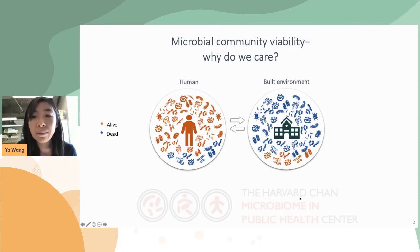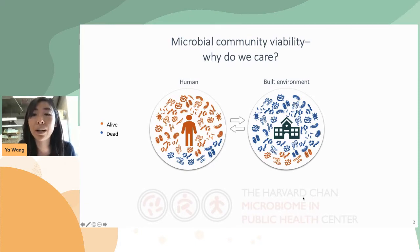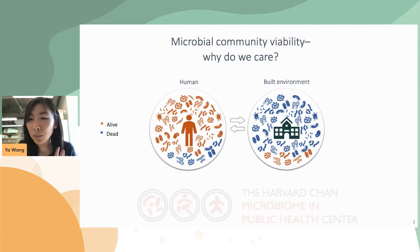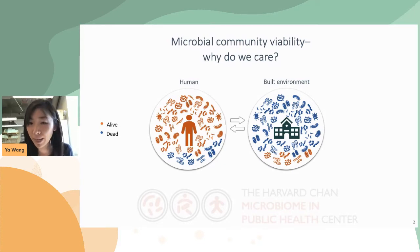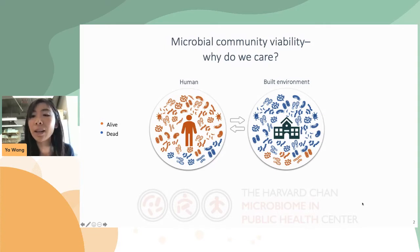In conventional sequencing methods, signals from dead microbes in built environments are also detected, which could bias or sometimes overwhelm the viable members. In that case, you still get a preview of the whole community, but definitely not the viable fraction of it. This may not matter much when you're just surveying the community, but it matters when you want to know what they are doing, because the functions of microbial communities are defined by the viable members.